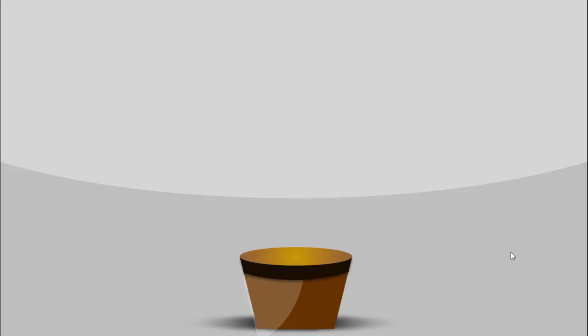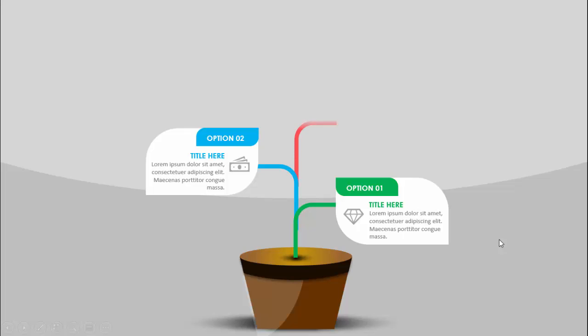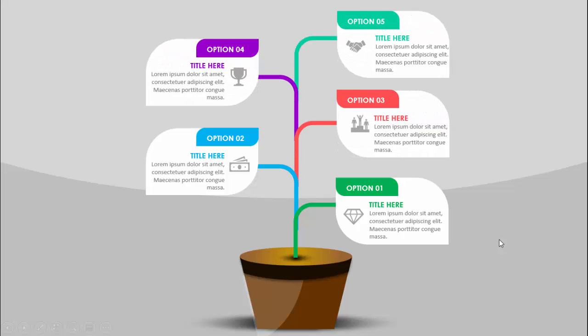In today's tutorial I am going to show you how to create five animated leaf options infographic slide in PowerPoint. As you can see, this is the final result, and when I click it will show the first option — the stem with the leaf — where we can add the option with the title, icon, and detailed text. On my next click it will show option 2, then option 3, option 4, and option 5.